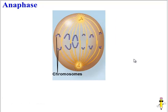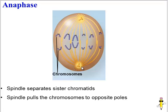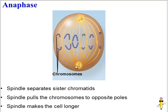Metaphase is followed by anaphase. In anaphase, the spindle is the star. Some of the spindle fibers are pulling apart the sister chromatids, and once the sister chromatids are separated, they're now considered independent, fully-fledged chromosomes. The spindle will continue to pull them to opposite poles of the cell. Some of the spindle fibers — the ones not attached to chromosomes — are going to pull apart in order to lengthen the cell, which will help the cell divide in the next step.